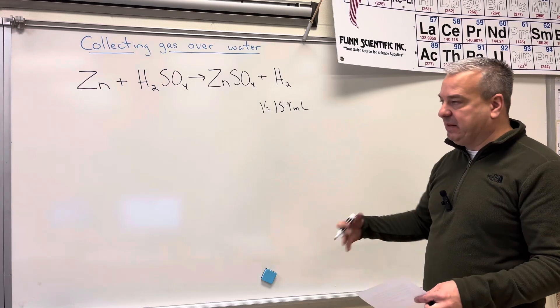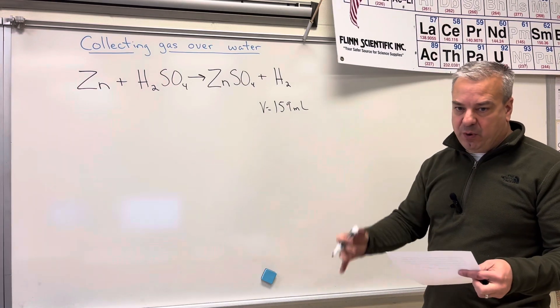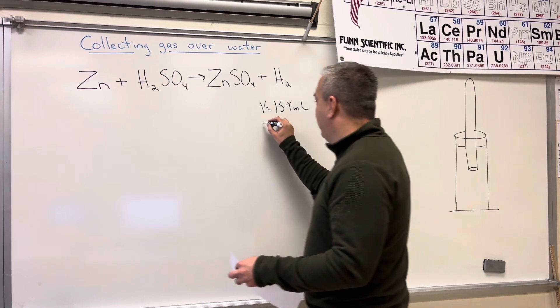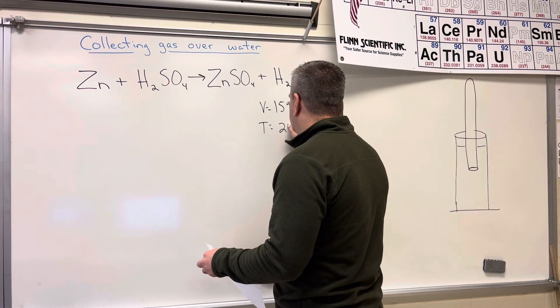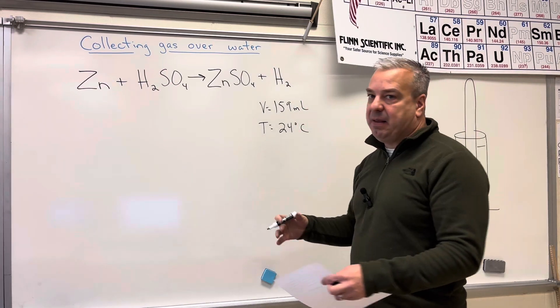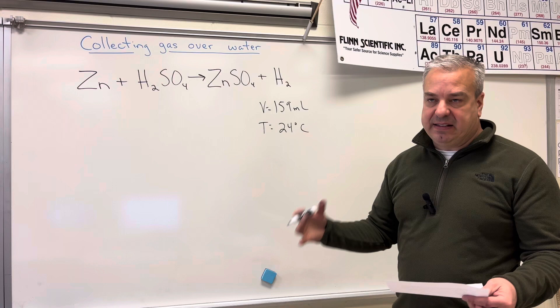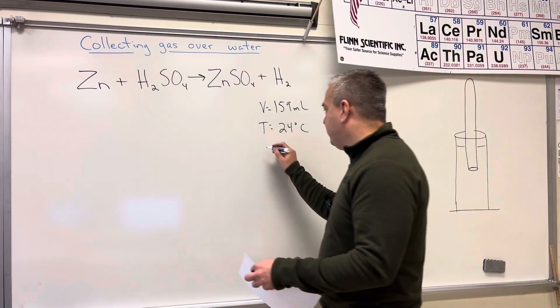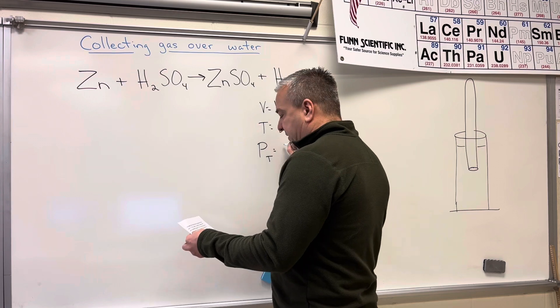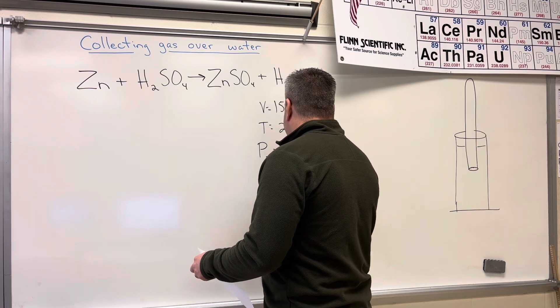They say that it's wet, and that's because it's collected over water, which I'm going to describe here in a few minutes. It has a temperature of 24 degrees Celsius, so we have the temperature as well. And it says that the barometric pressure is 738 torr, so I'm going to put this as the total pressure of 738 torr.